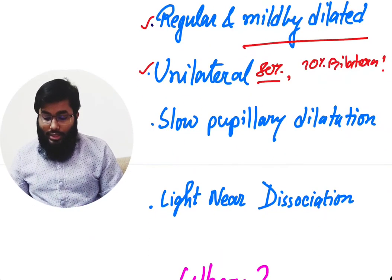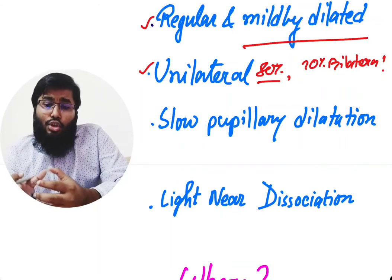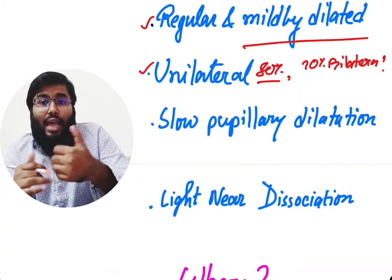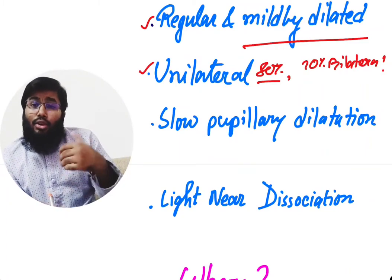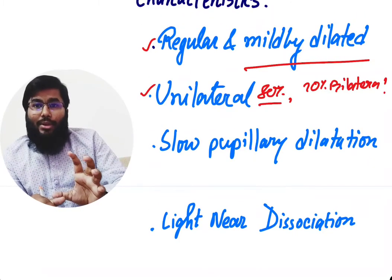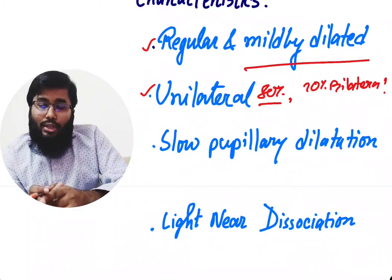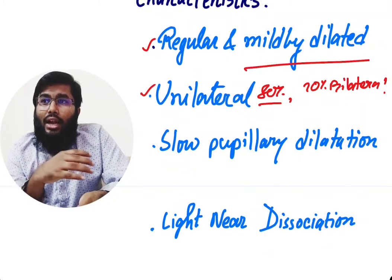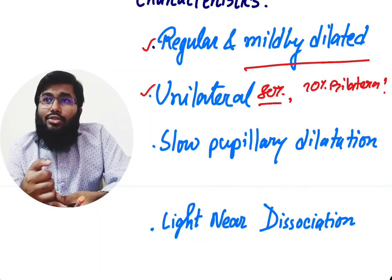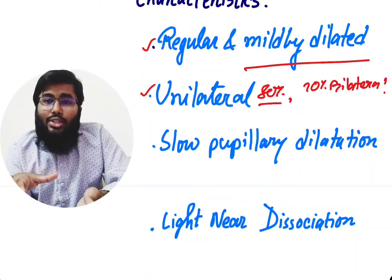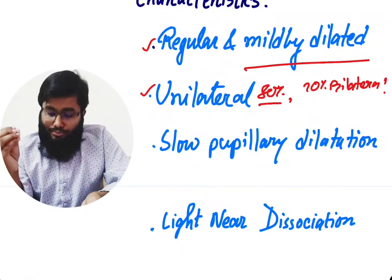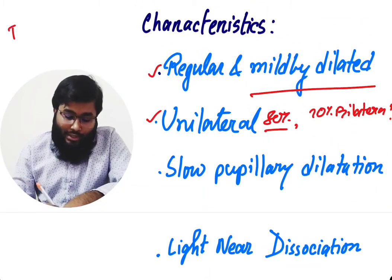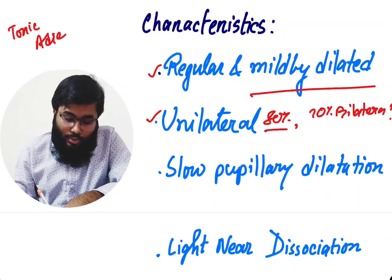The pupil is mildly dilated, the condition is typically unilateral, and you will find slow pupillary dilatation. Why does slow pupillary dilatation occur? As the sympathetic fibers gain the upper hand they cause dilation, but the parasympathetic pupillary fibers of the sphincter pupillae muscle still partially function — because ciliary ganglion damage does not damage all the nerves. So the pupil is mildly dilated and remains in a tonic state.